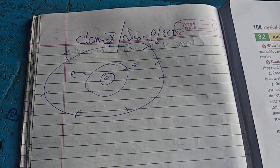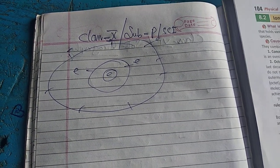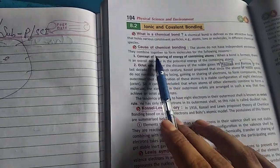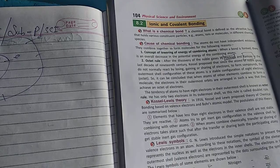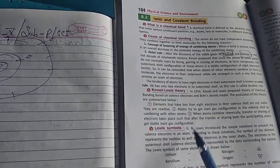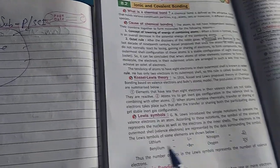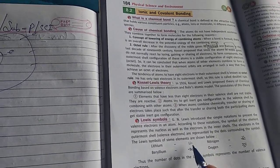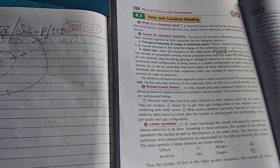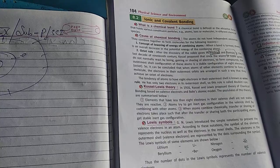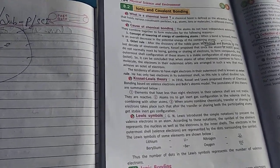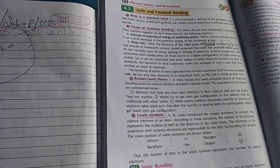Good morning to Class 10 students of Saint Paul High School. In this video we will be talking about ionic bonding. In the last video we talked about causes of chemical bond, what is chemical bond, the Kossel-Lewis theory and Lewis symbols. Scientist G.N. Lewis used the element symbol and dots to represent elements and their valency. Valency is very important because you will understand much better if you know the valency of the electrons.